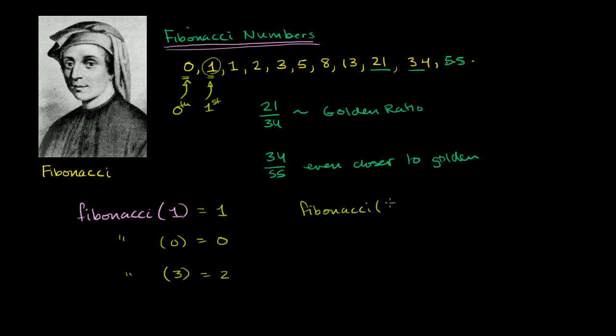Fibonacci of 5 should return 0, 1, 2, 3, 4, 5. It should actually return 5. And what I want you to do is write a function so we could put in any argument over here, and I'll return that term of the Fibonacci sequence.